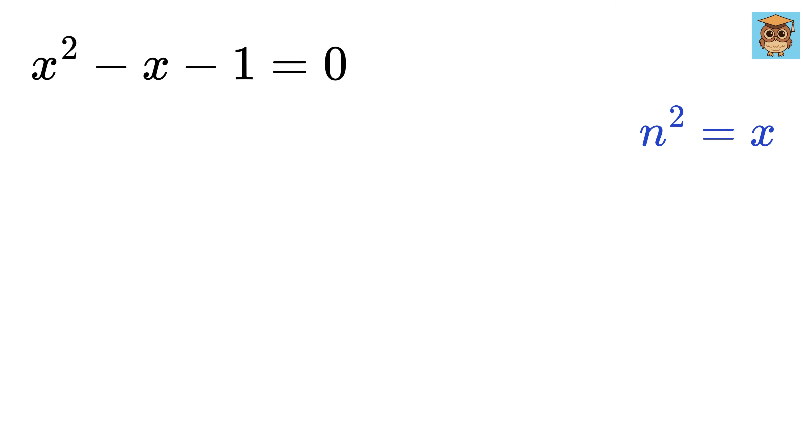We can solve this using completing the square method. First, move the constant to the other side like this. Now add 1 by 4 on both sides to get this.